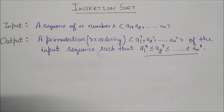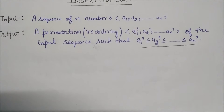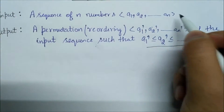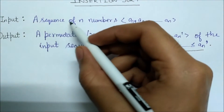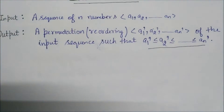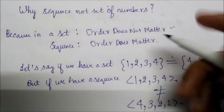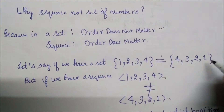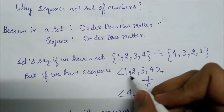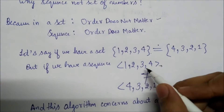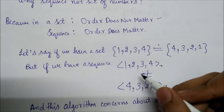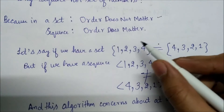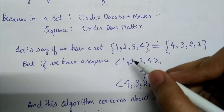In this video we will be discussing insertion sort. We take as input a sequence of numbers a1, a2, ..., an. We use a sequence rather than a set because in a set order does not matter, but in a sequence order does. For example, the set {1,2,3,4} and {4,3,2,1} are the same, but as sequences they are different, because a sequence cares about which position each element occupies.